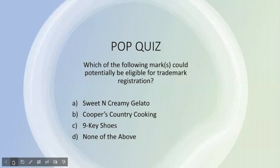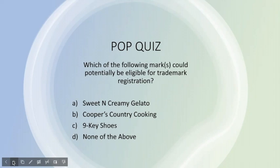It's time for another pop quiz. Which of the following marks could potentially be eligible for trademark registration? A. Sweet and Creamy Gelato. B. Cooper's Country Cooking. The correct answer is D — none of the above. Choice A is incorrect because it's merely descriptive of the product itself. Choice B is incorrect because it consists primarily of a last name and likely could not prove acquired distinctiveness. Choice C is incorrect because it's confusingly similar to Nike shoes.